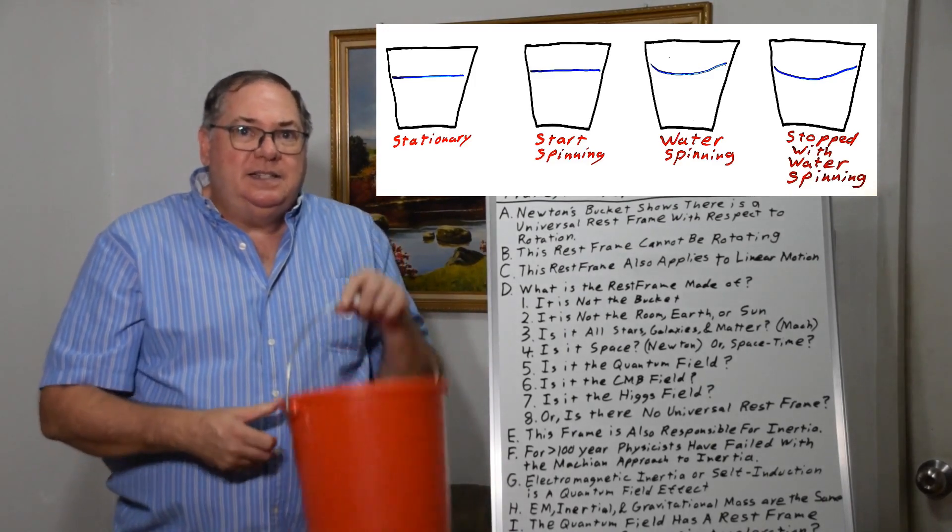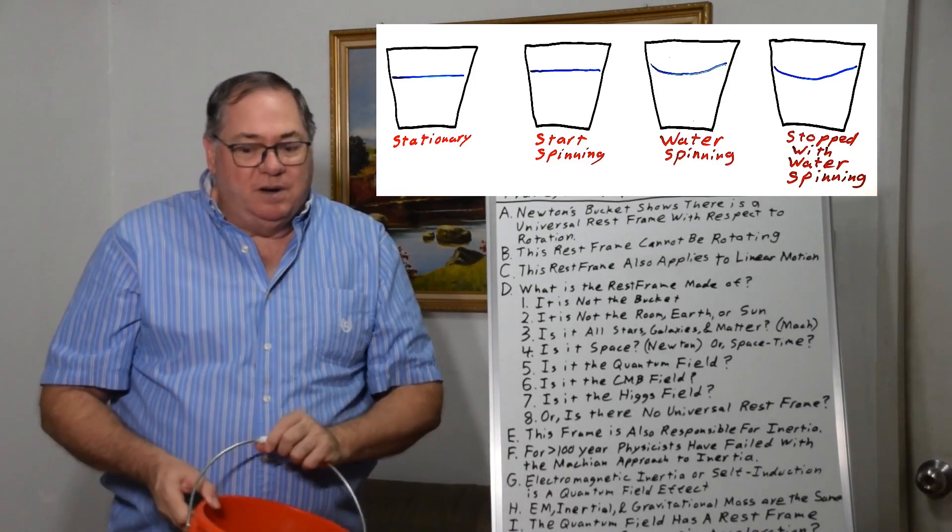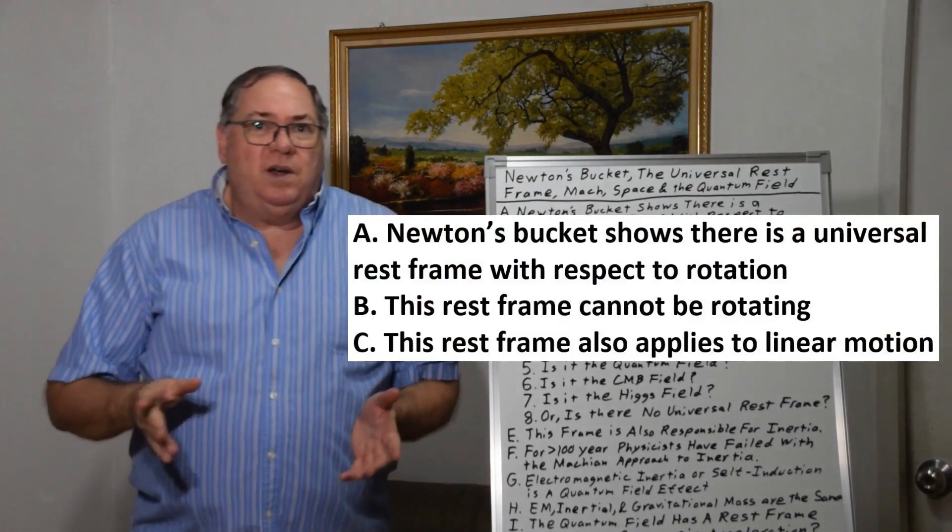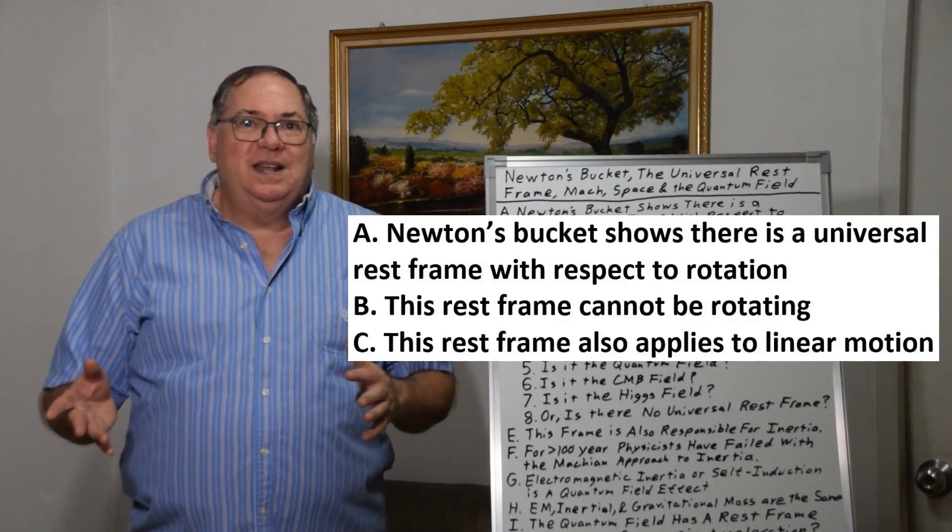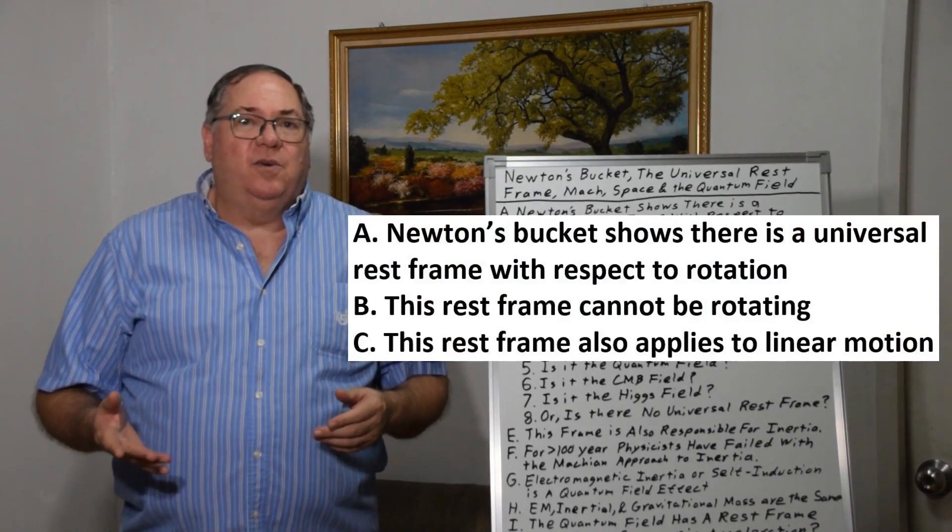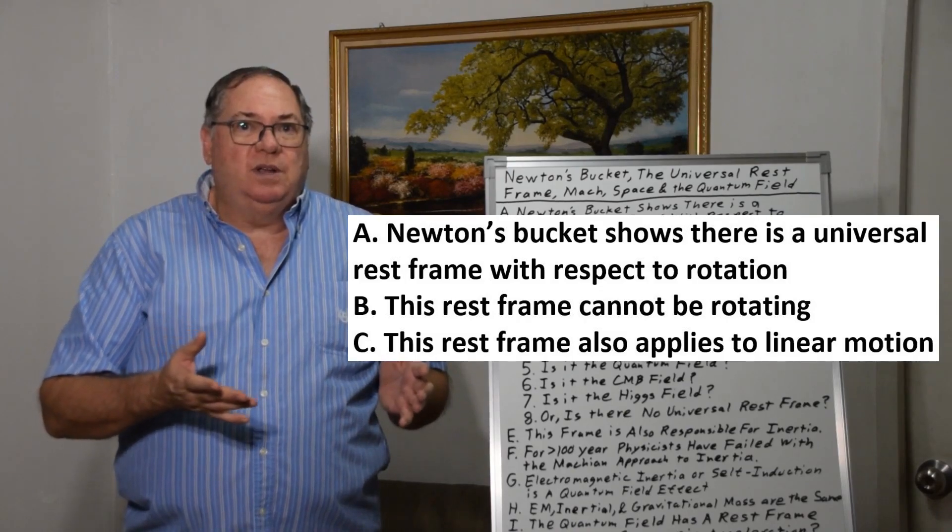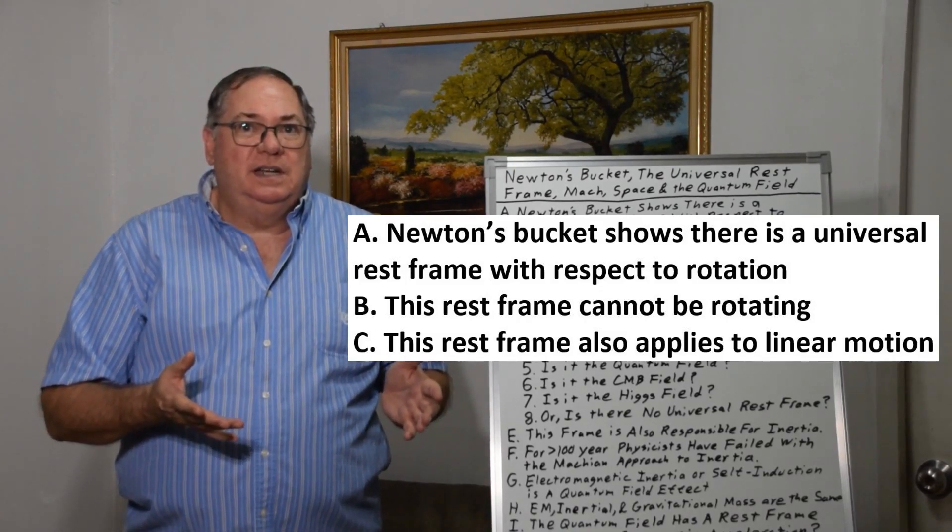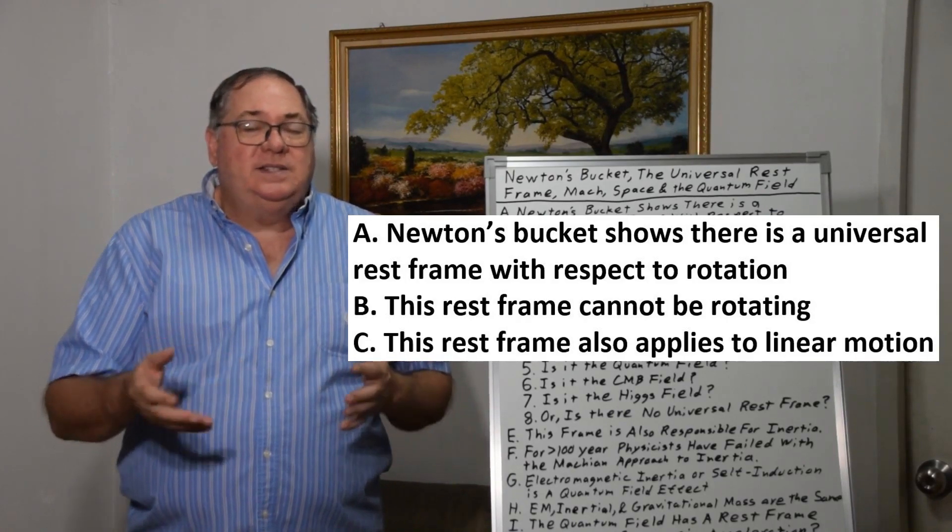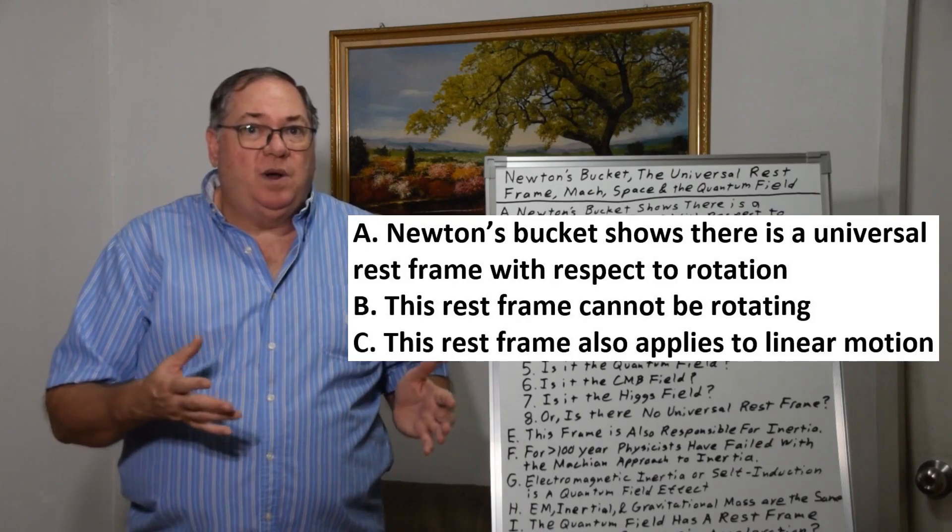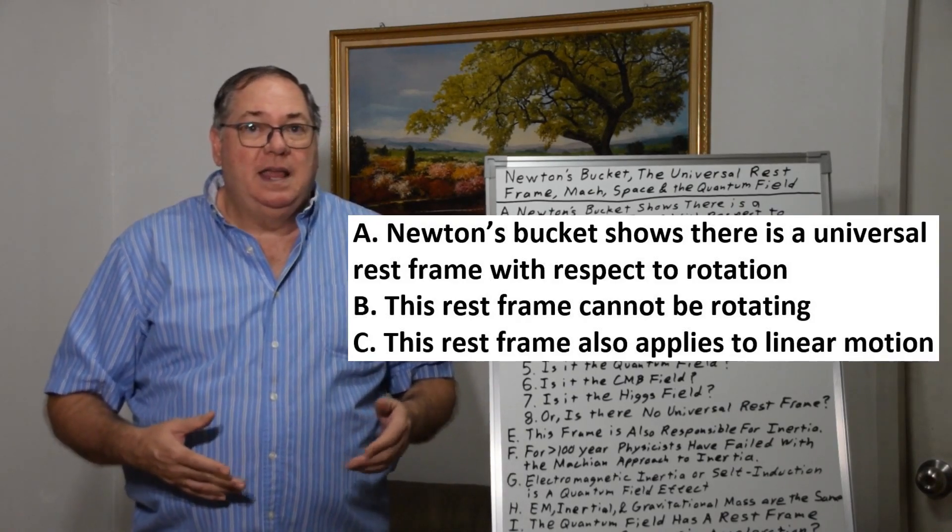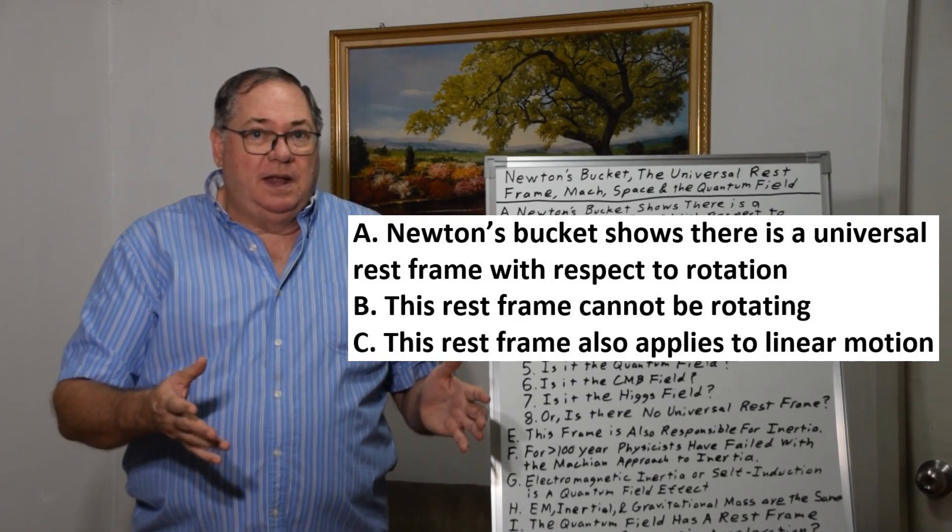And that shows that it's not the bucket making water curve. But somehow, the water knows that it's rotating. And that can only be true if there's some sort of universal frame of reference, absolute frame of reference. And this absolute frame of reference tells the water somehow, through a physical mechanism that must be determined, that it's rotating.